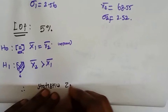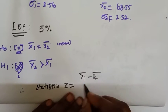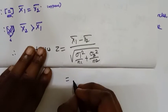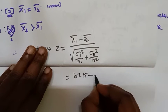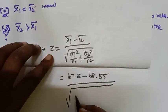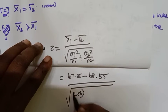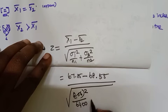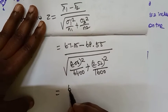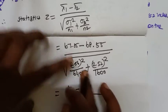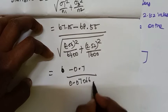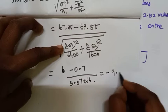Step 4: Calculate the test statistic. Z = (x1-bar minus x2-bar) divided by the square root of (sigma1-squared over n1) plus (sigma2-squared over n2). Substituting: Z = (67.85 minus 68.55) divided by the square root of (2.56 squared over 6400) plus (2.52 squared over 1600). Simplifying gives a denominator of 0.07066, and the final Z value is approximately minus 9.906.